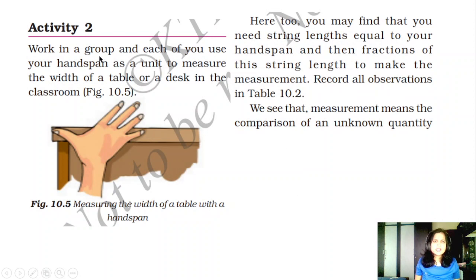Activity 2. Work in a group and now your palm is used for measuring. Hand span is used for measuring the desk now. Work in a group and each of you use your hand span as a unit to measure the width of the table and desk in the classroom. Using the hand span, everybody's hand is of different size. That's why you get how many hand spans, 10 hand spans, 9 hand spans, like this you may get the different units.